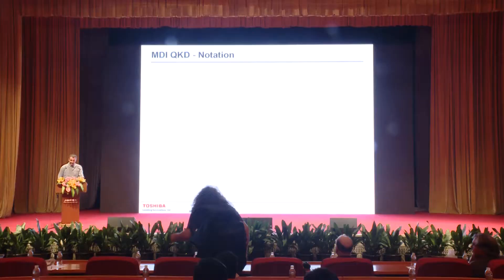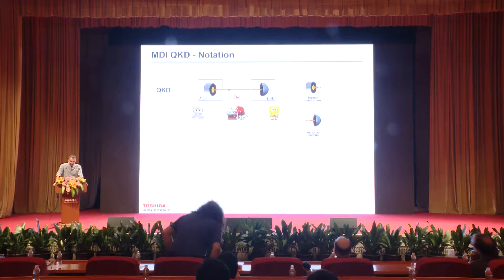Let me first introduce my notation. We start from QKD. Here we have a transmitter, usually called Alice, and a receiver, Bob. These are the standard characters — Alice, Bob, and Eve. There is a security perimeter which, in theory, cannot be penetrated, and you always need something like that if you want a cryptographic scenario.